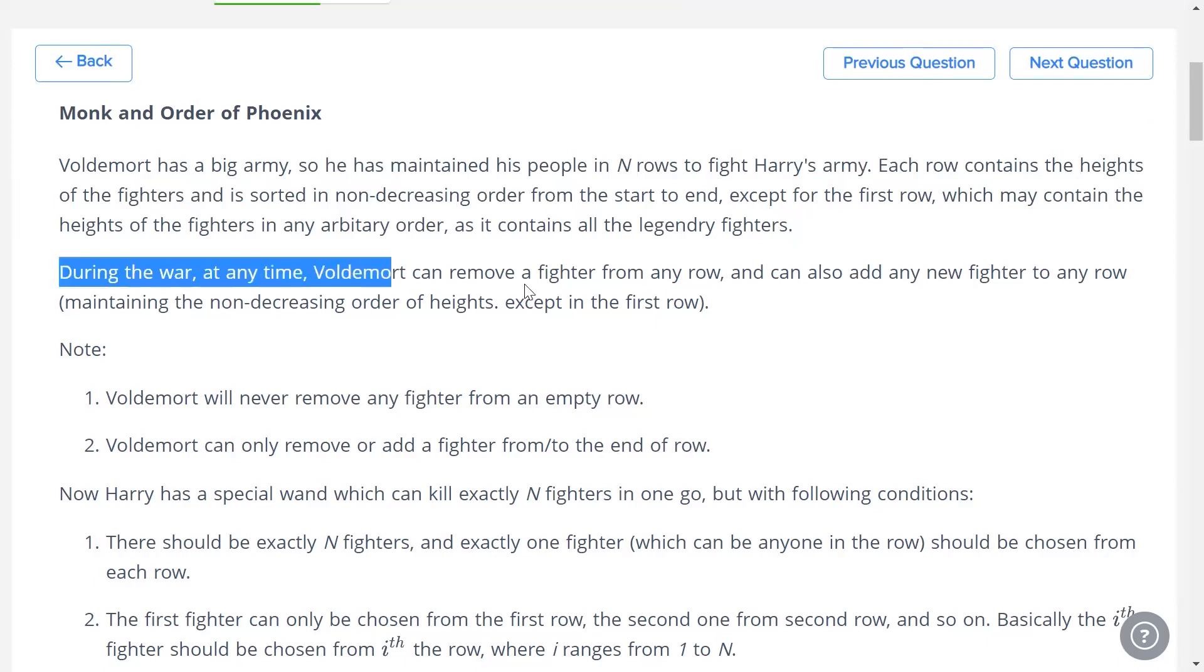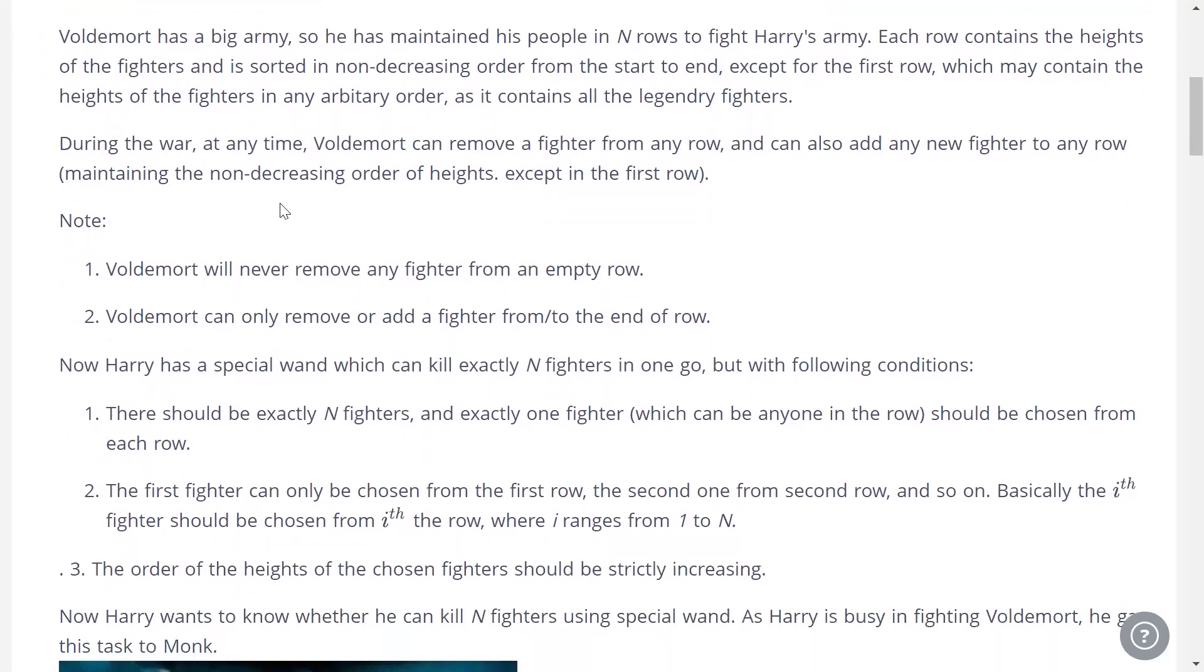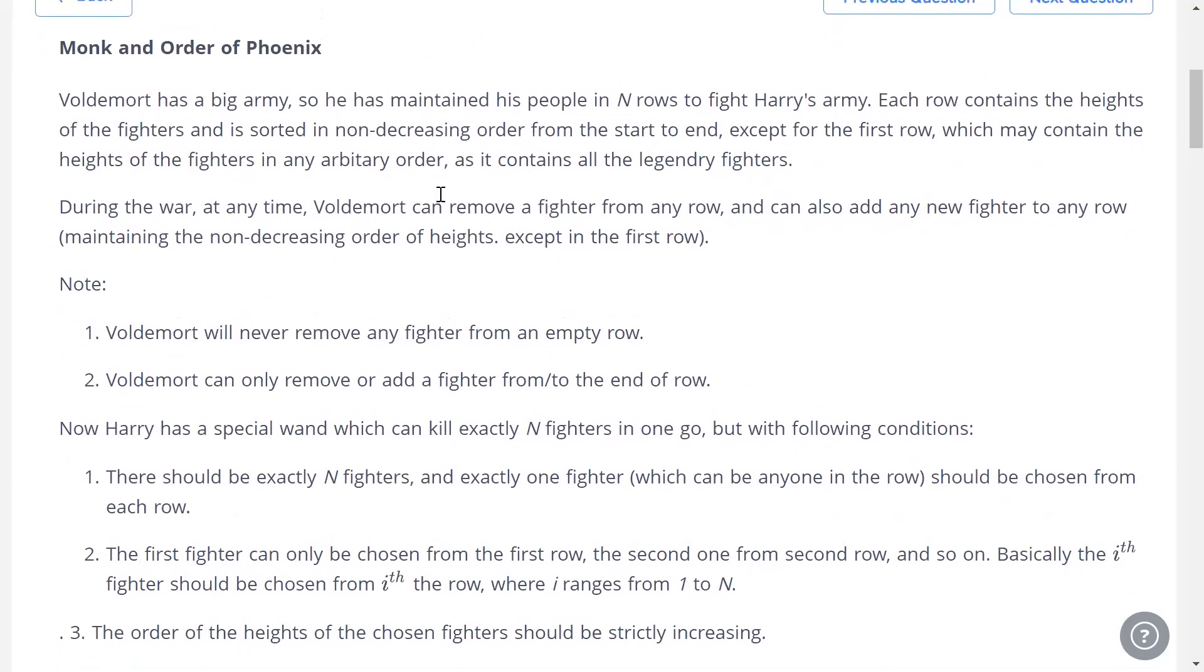During the war, Voldemort can perform one of two operations. He can either remove a fighter from any row, or he can add a new fighter to any row. Whenever Voldemort adds a fighter to one of those rows, he is going to be the tallest fighter in that row.